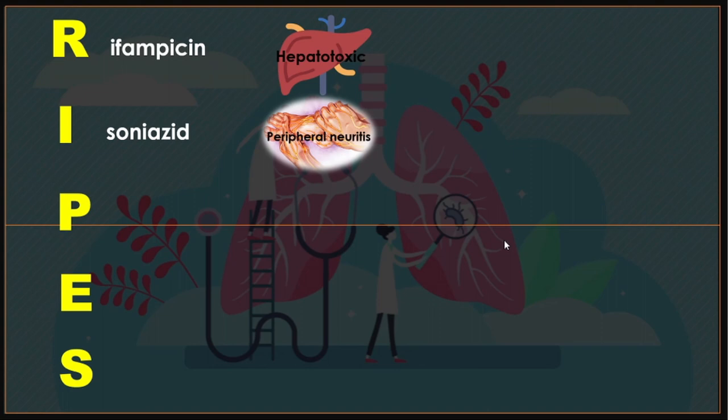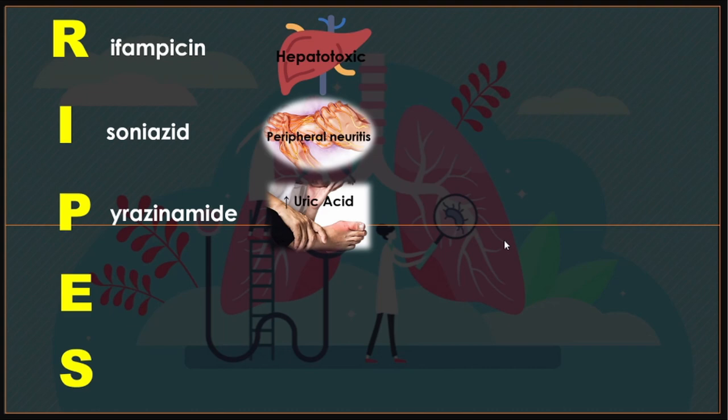P — pyrazinamide. Pyrazinamide is a bactericidal agent which increases uric acid — so you need to monitor uric acid levels closely. Its common side effects are hyperuricemia (increased uric acid in the blood), hepatotoxicity, skin rash, arthralgias, and GI distress.